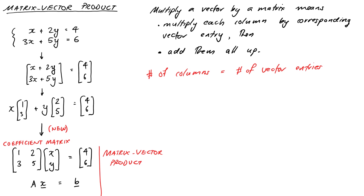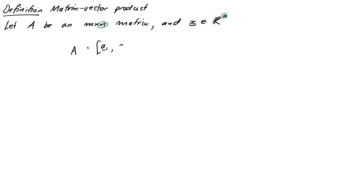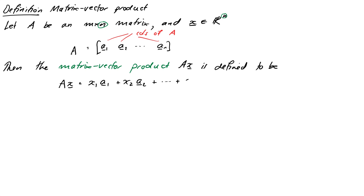So let's formalize that with a definition. A matrix-vector product: take A to be an M-rows, N-columns matrix, and x to be a vector in R^N — notice the same number of columns as entries in the vector, that's N. We write our matrix as A = [a1, a2, ..., an], where the bold little a's are the columns of the matrix. Then the matrix-vector product A times x — you always write the matrix on the left — is defined as Ax = x1*a1 + x2*a2 + ... + xn*an.